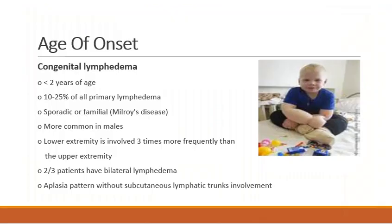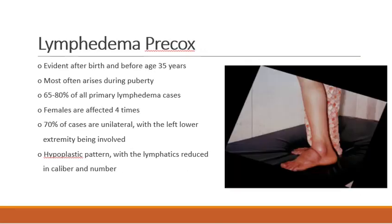Congenital lymphedema has onset less than two years of age and accounts for 10 to 25% of all primary lymphedema; it can be sporadic or familial. In familial cases — Milroy disease — it is due to FMS-like tyrosine kinase gene deficiency. It is more common in males, the lower extremity is involved three times more frequently than the upper, and two-thirds of patients have bilateral lymphedema with an aplasia pattern without subcutaneous lymphatic trunk involvement.